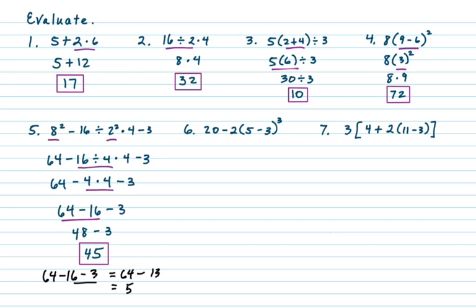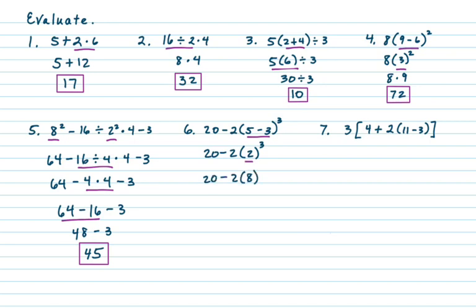On number six we have 20 minus 2 times the quantity 5 minus 3, which is cubed. The highest priority is to simplify inside the parentheses: 5 minus 3 is 2. So we have 20 minus 2 times 2 to the third power. Then the exponent goes next: 2 cubed is 8. So it's 20 minus 2 times 8. The multiplication gives 16, and 20 minus 16 is 4.